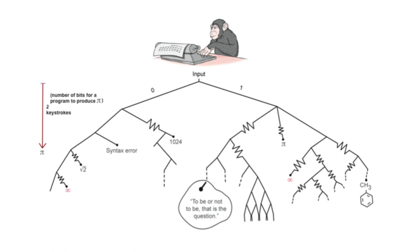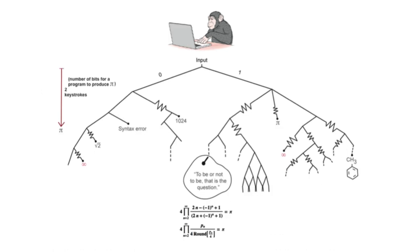But if instead of a typewriter one places a monkey in front of a computer with each key on the keyboard representing an instruction in binary for a computer program, it turns out that the probability of the monkey to produce the complete works of Shakespeare or anything else with high complexity increases dramatically to the point that it might be likely to happen during the span of the age of the universe.